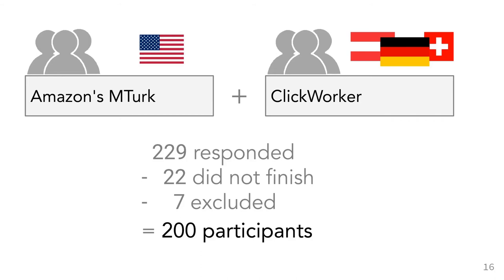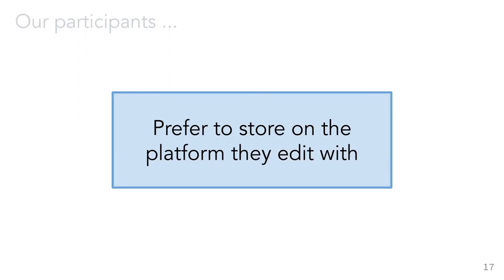I now want to give you a quick overview of some of our findings. Due to the short time of this talk and the wide area covered in our survey, I still recommend having a look at our paper for a more in-depth discussion. Overall, online office usage is quite prevalent among our participants, who often use Google Drive or Microsoft Office 365. Although German-speaking participants still prefer offline Microsoft Office by a slight margin. Unsurprisingly, our participants prefer to store their documents on the platform they edit them with — in the cloud for online apps and locally for offline office software.